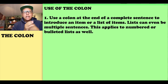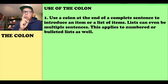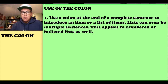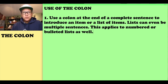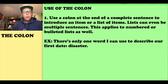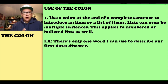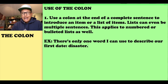Rule number one: use a colon at the end of a complete sentence when you're introducing even one item or a list of items. Lists can even be multiple sentences, and lists can also be numbered or bulleted. For example: 'There's only one word I can use to describe our first date: disaster.' Notice it wasn't a proper noun, so it's not capitalized.